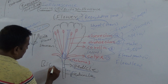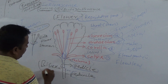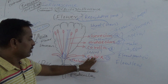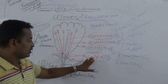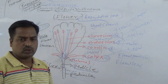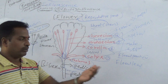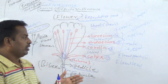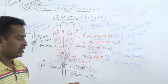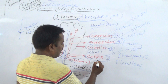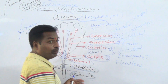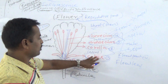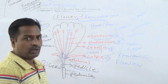When both male and female parts are reported in a single flower, that is a bisexual flower. The unit of Calyx is called sepal. Sepals are of two types: Gamosepal, meaning united, and Polysepal, meaning free sepals.